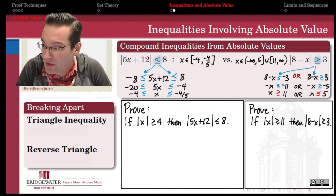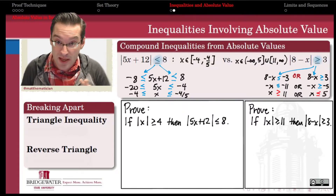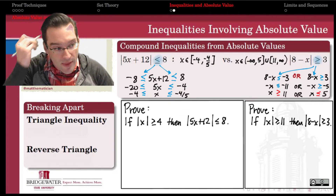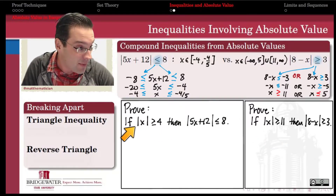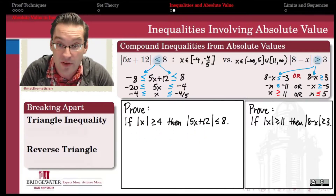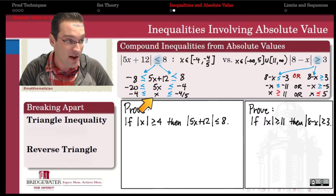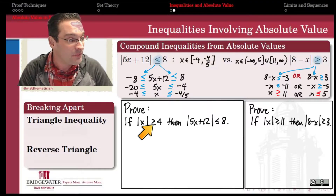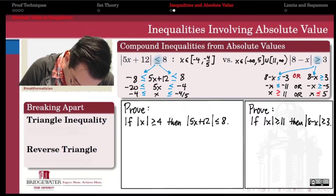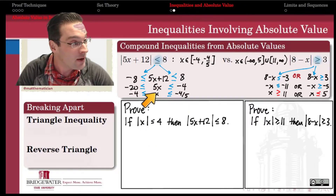That's how to solve absolute value inequalities. But in real analysis, we often have to substantiate absolute value inequalities as part of a proof — they look more like if-then statements. For example, suppose we want to prove that if the absolute value of x is less than or equal to 4, then we are guaranteed that the absolute value of 5x plus 12 is less than or equal to 8. We might just solve the inequality as before and try to draw the conclusion from there.